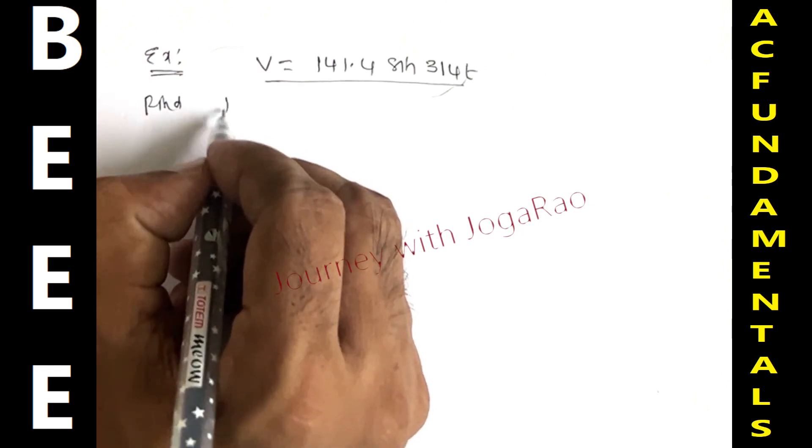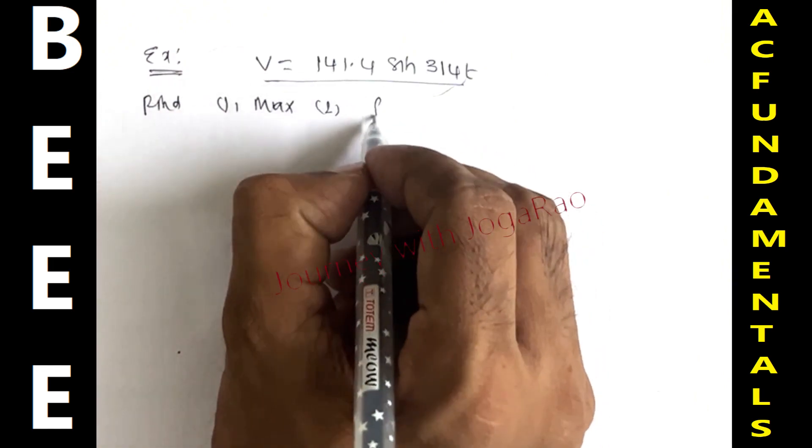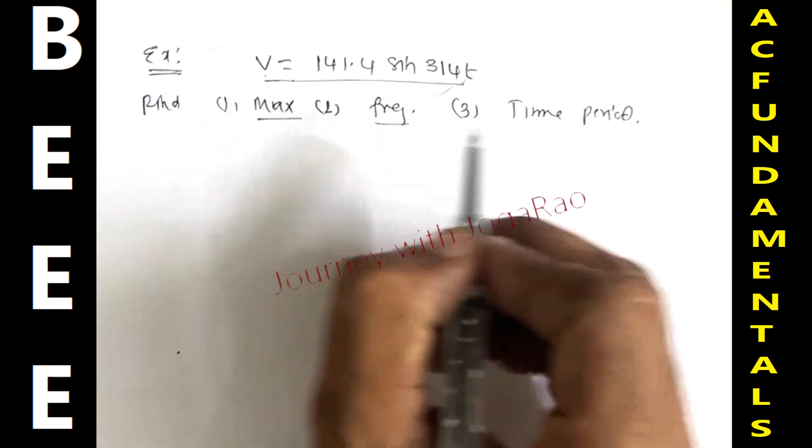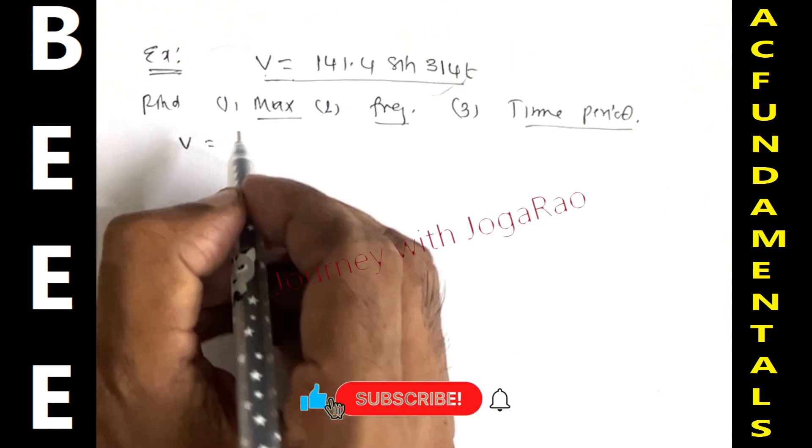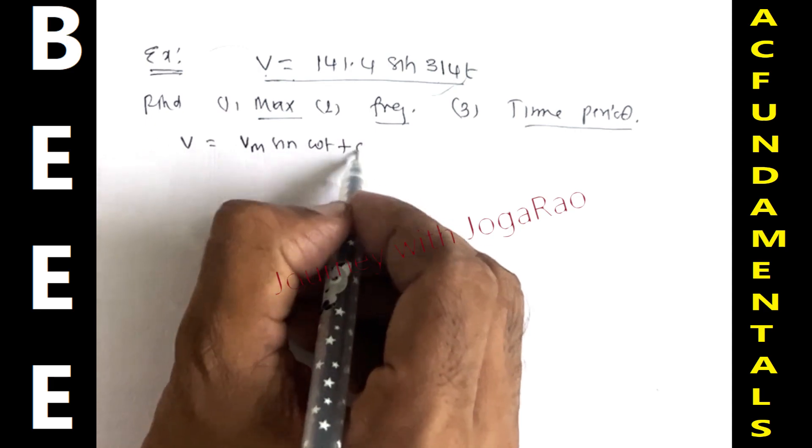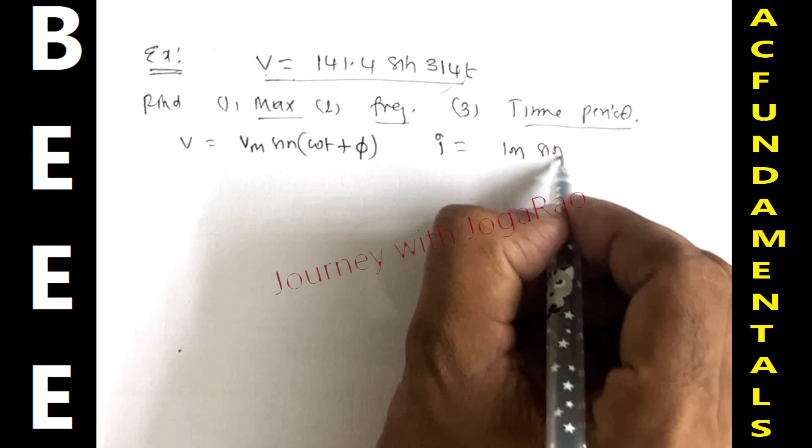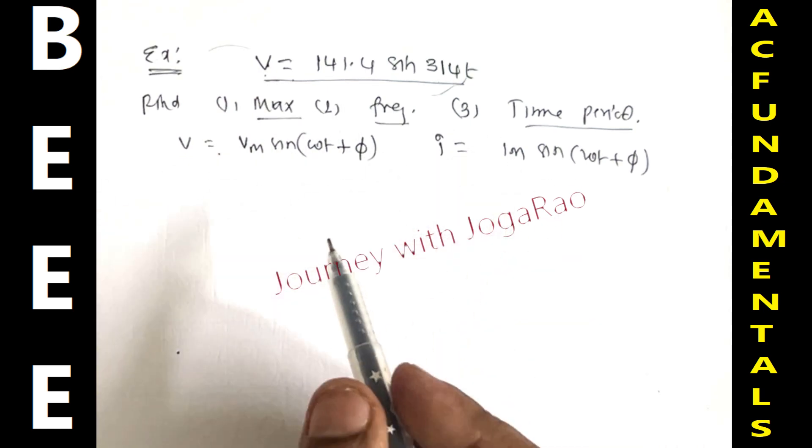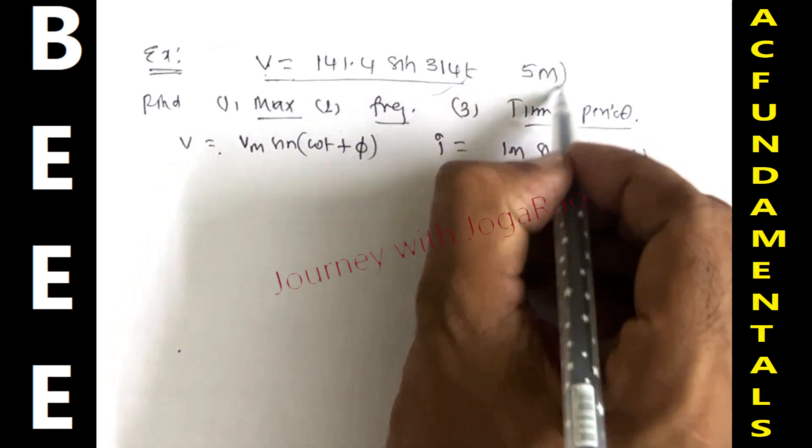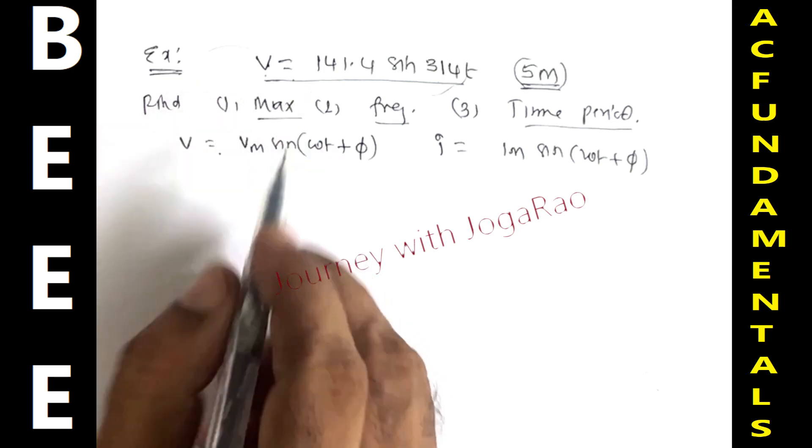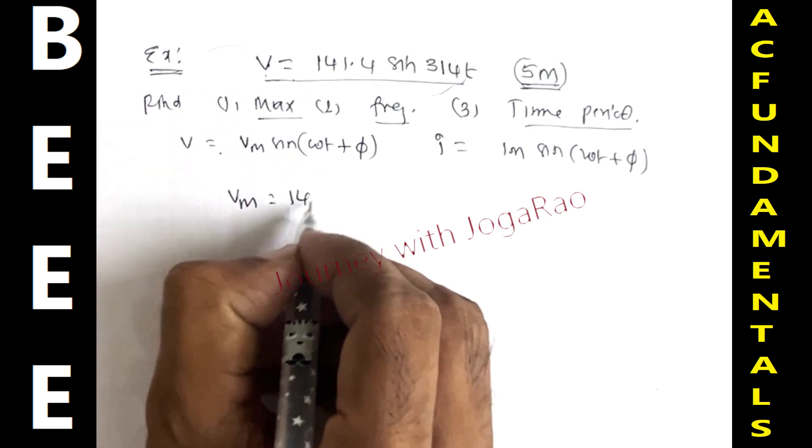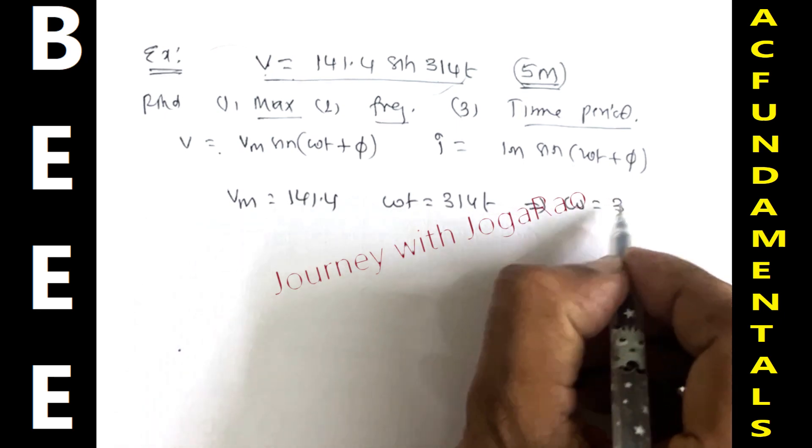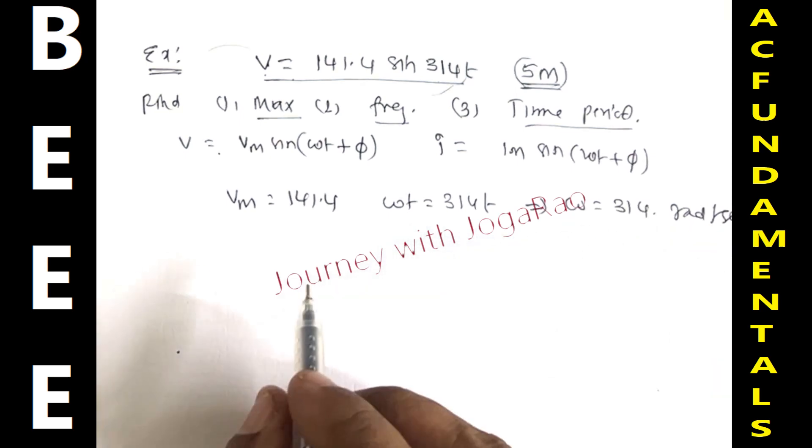V is equal to 141.4 sin 314t. Find: first one, maximum value; second one, frequency; third one, time period. For alternating voltage, the standard equation is V equals Vm sin omega t plus phi. We just compare with the standard equation. Vm is equal to 141.4, and omega t is equal to 314t, so omega is equal to 314 radians per second.